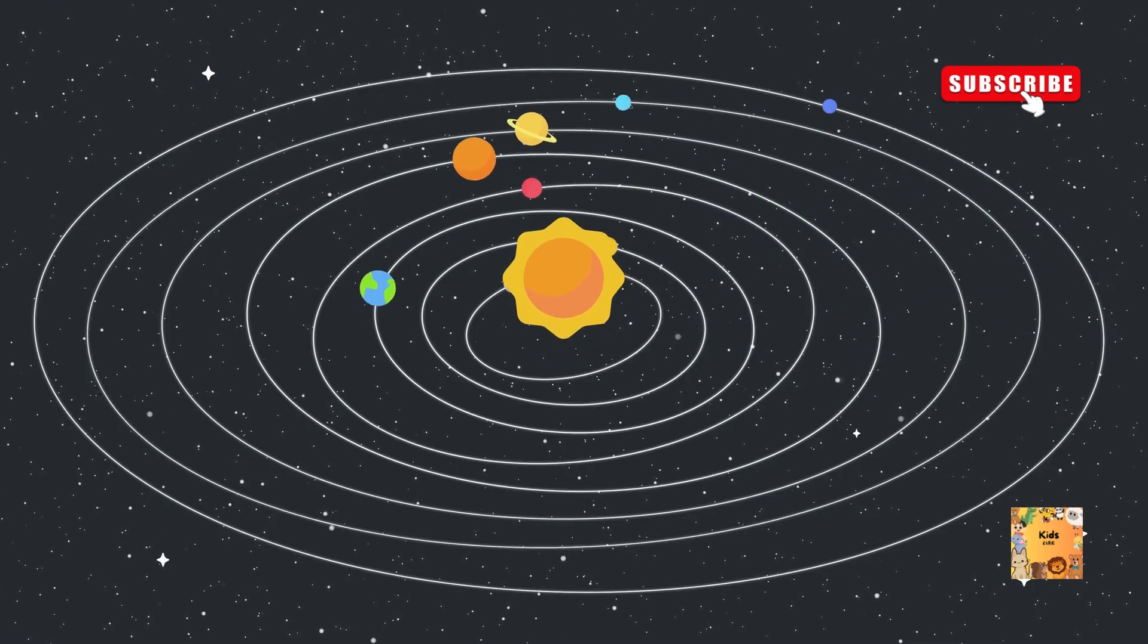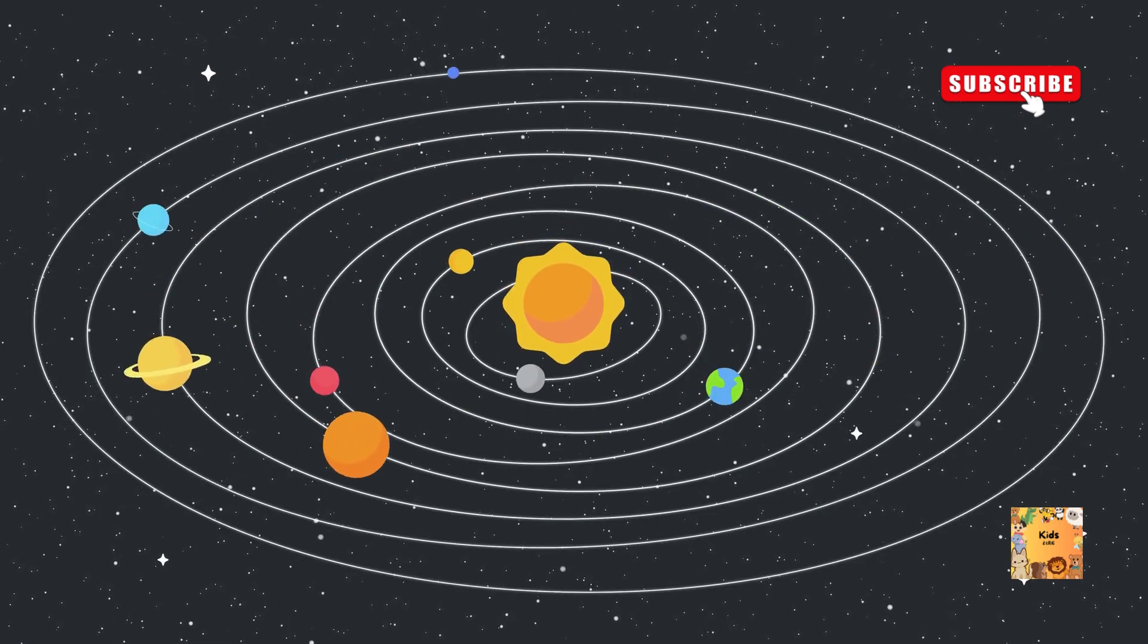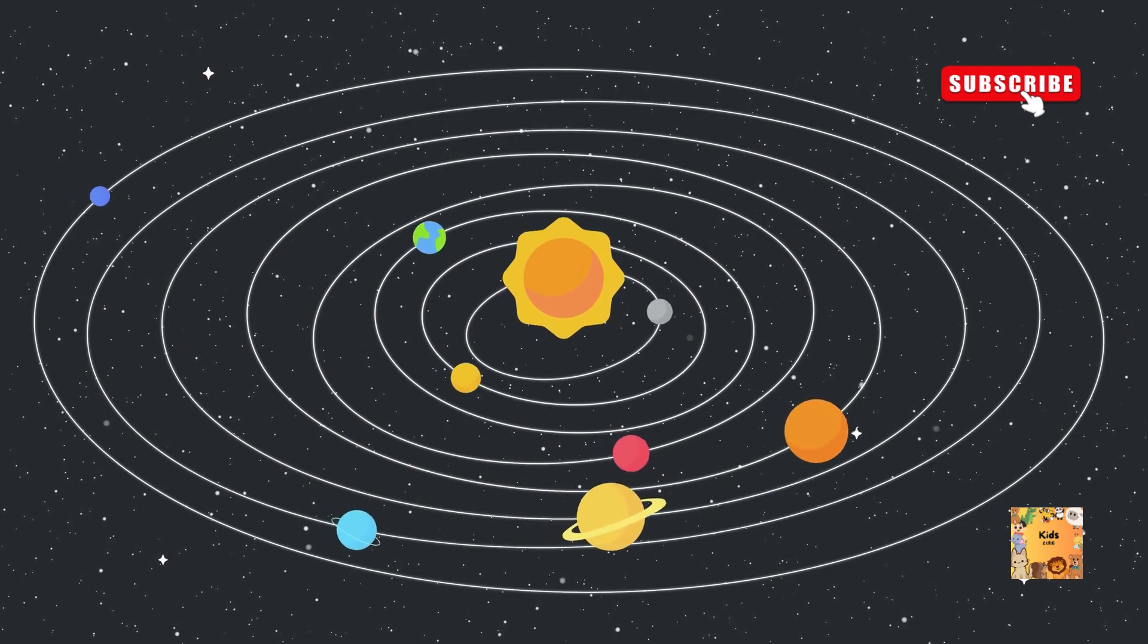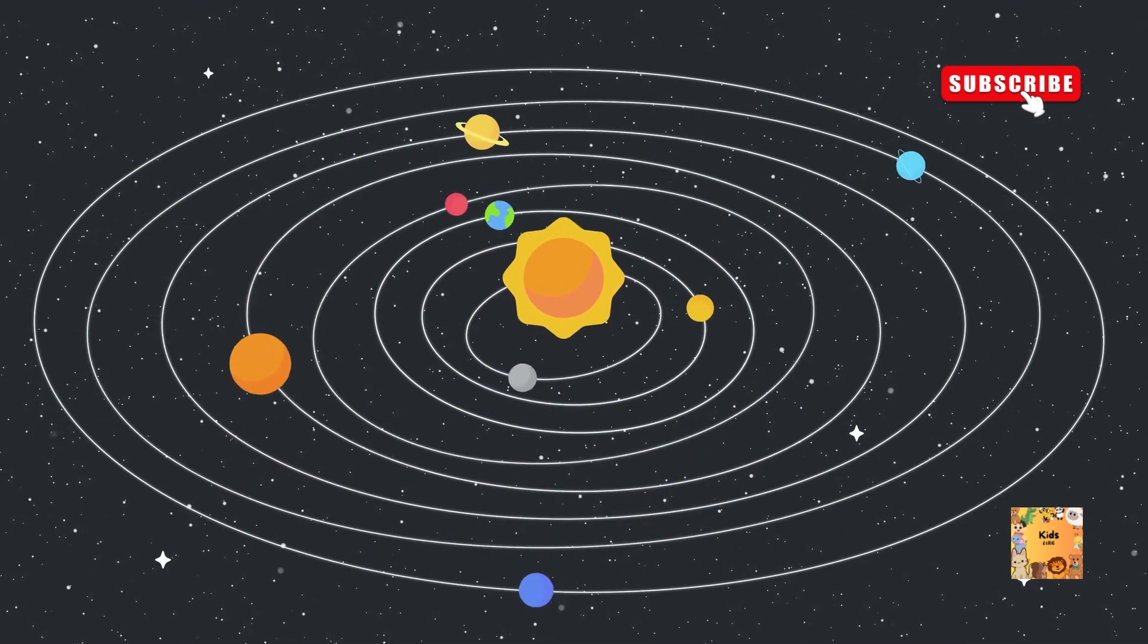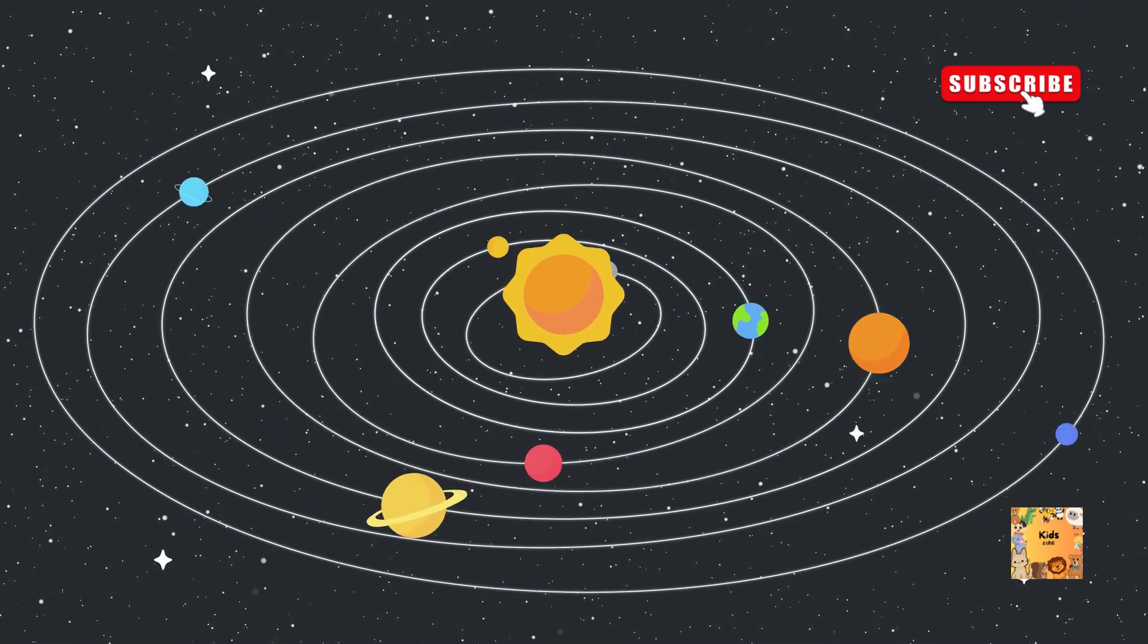The solar system is a vast system that includes the sun, the planets, their moons, asteroids, comets, and other celestial objects. Here are the main components of the solar system.